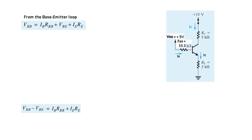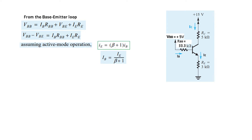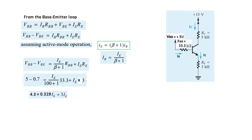Applying the KVL formula: VBB minus VBE equals IB·RBB plus IE·RE. Since IE = (β+1)·IB, we substitute IB = IE/(β+1). Solving for IE with β+1 = 101, we get IE equal to 1.29 milliamperes.